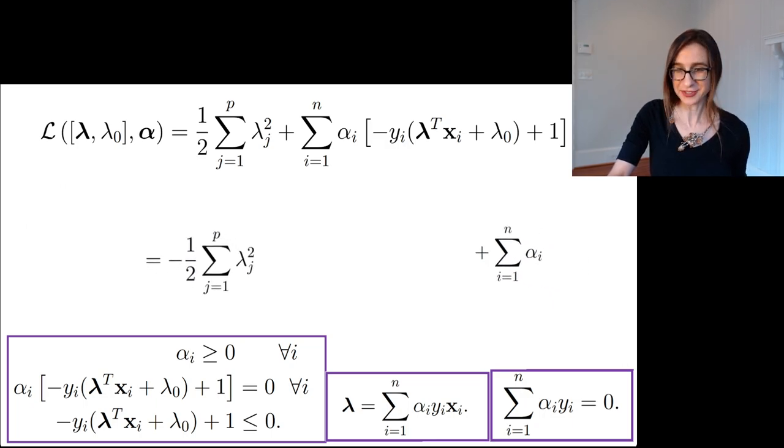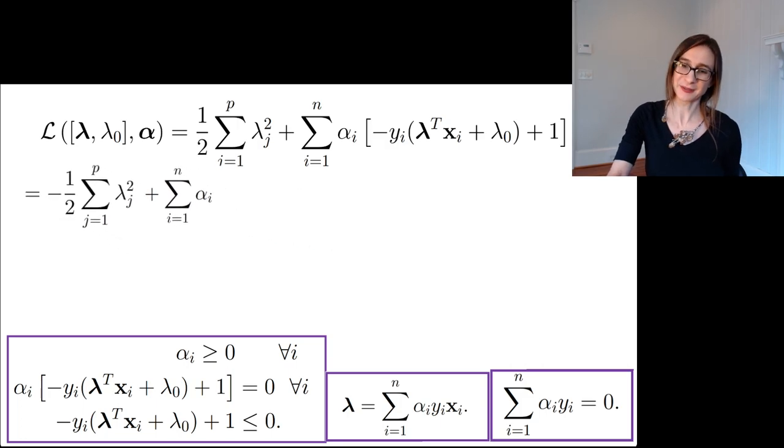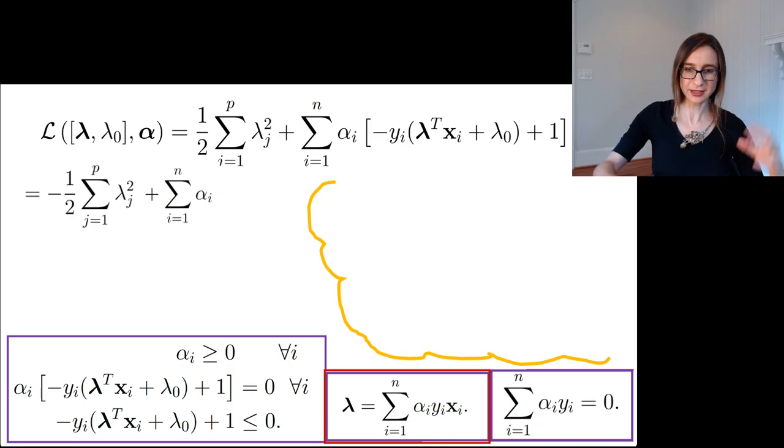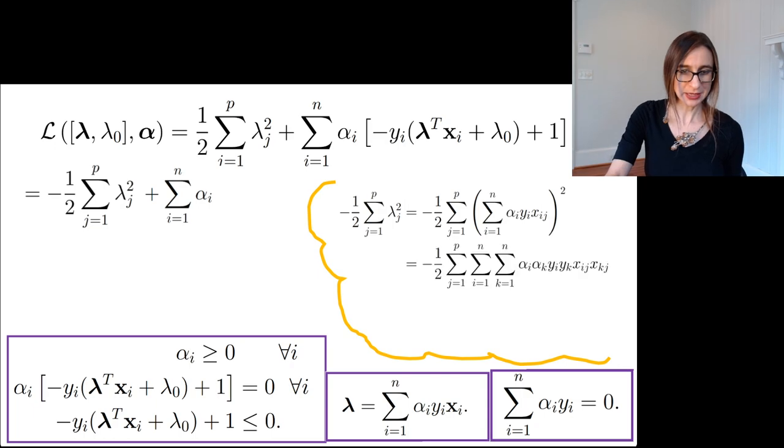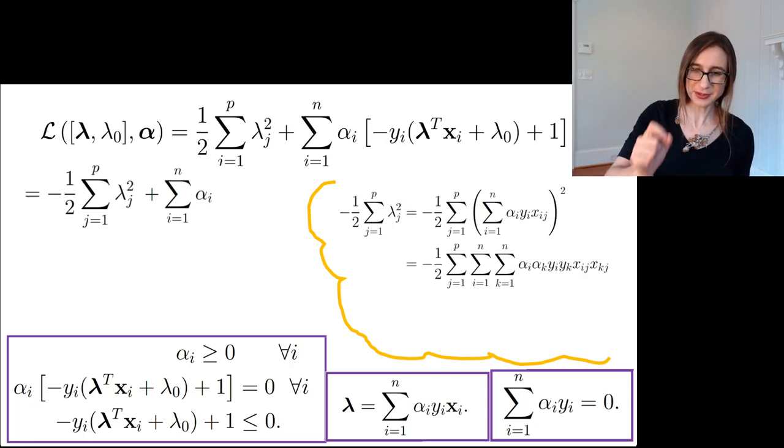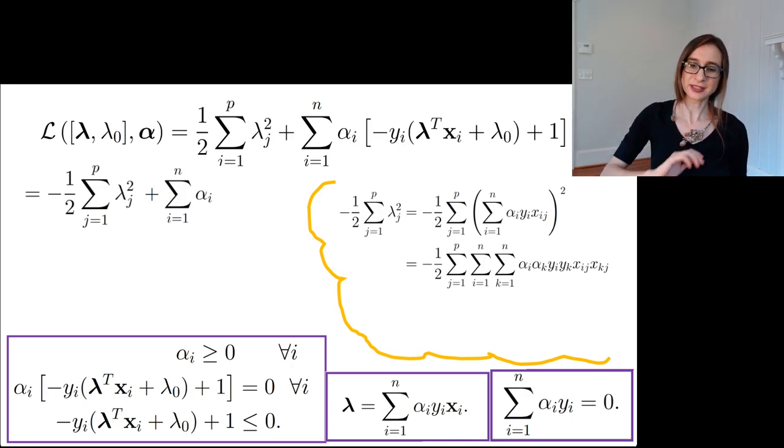That's what's left of the Lagrangian. We're getting closer, but I'm going to do a little side calculation here and just expand that first term by plugging in this Lagrangian stationary condition. The important thing to notice here is that there's one of those sums - the j sum - that can travel all the way to the end.